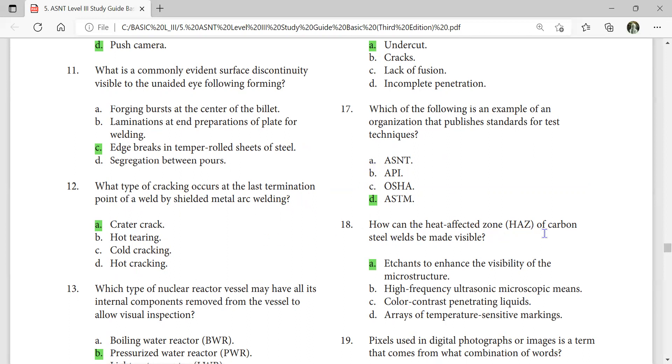How can the heat affected zone of a carbon steel weld be made visible? Etch to enhance the visibility of the microstructure.